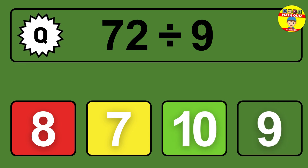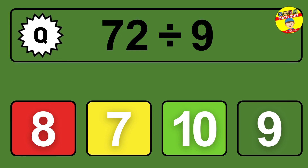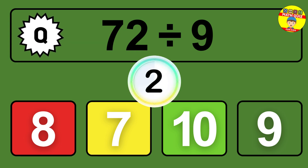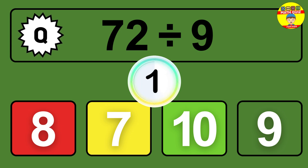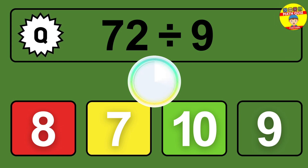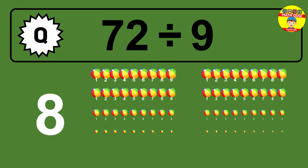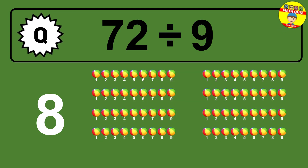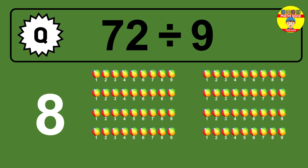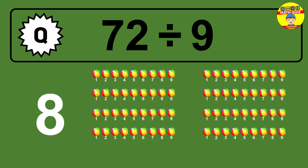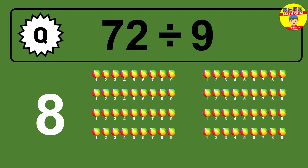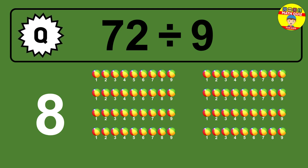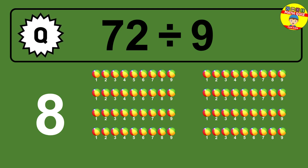What is 72 divided by 9? Picture this: you have 72 objects to divide into groups of 9. How many groups can you make? Let's think about it. Ready to find out? Let's break it down. Imagine you have 72 objects — now think about splitting them equally.